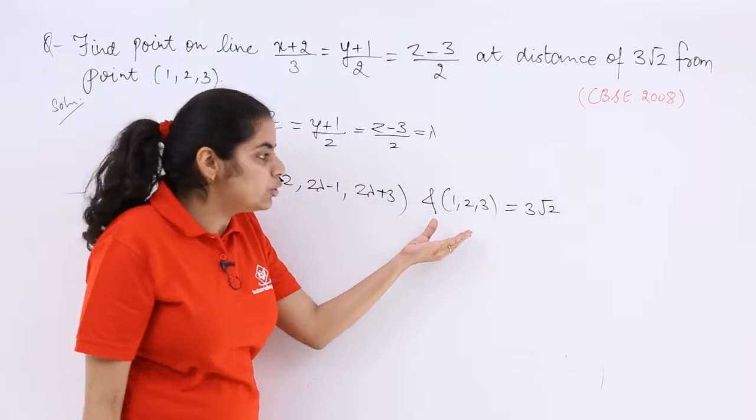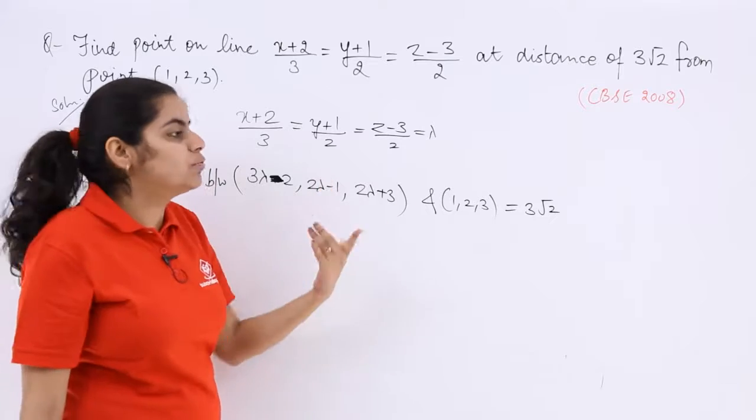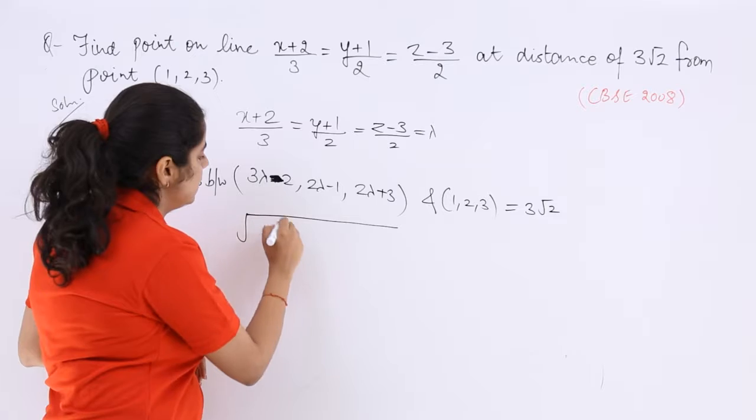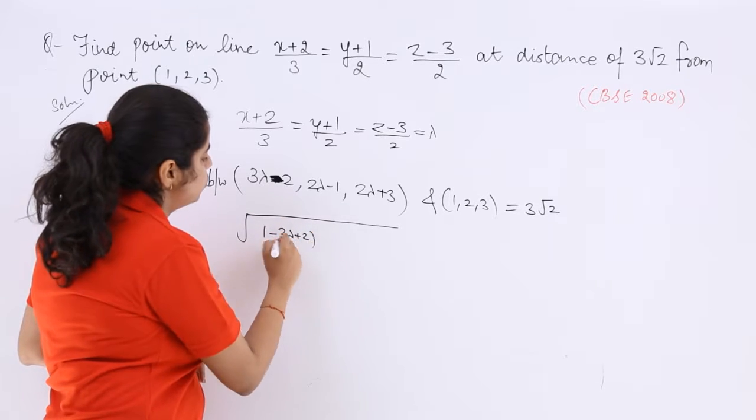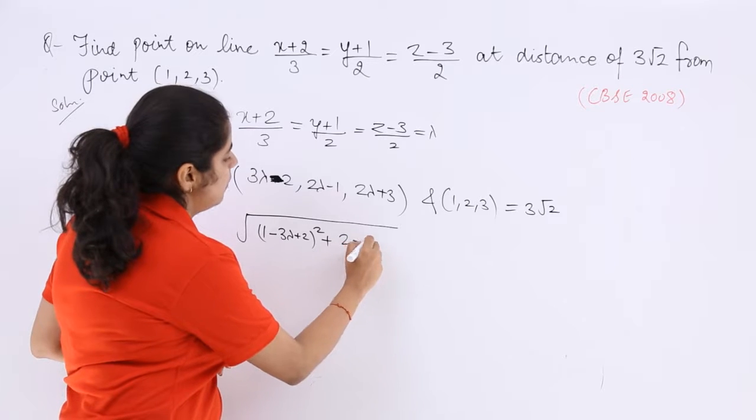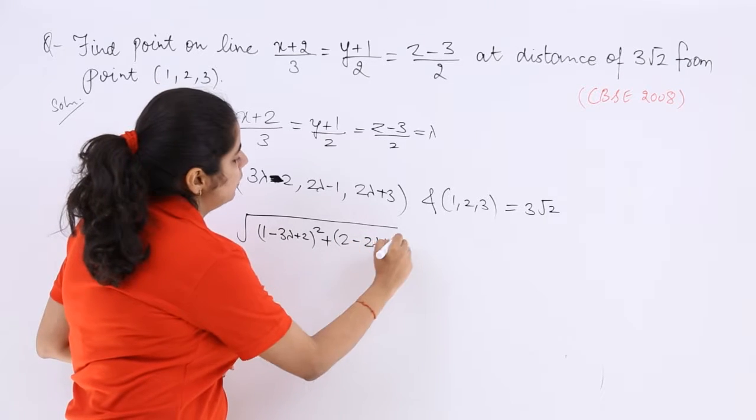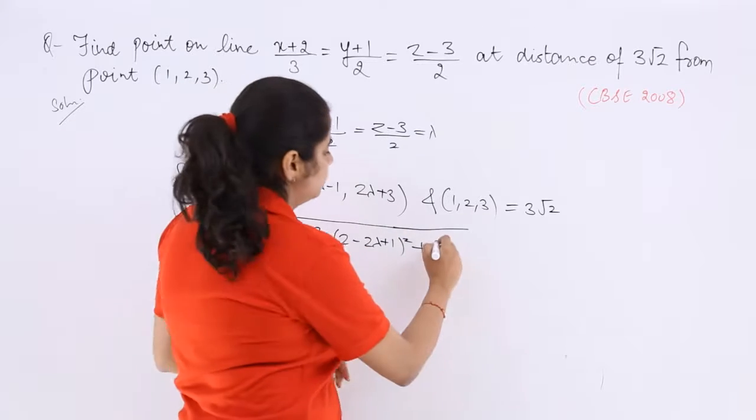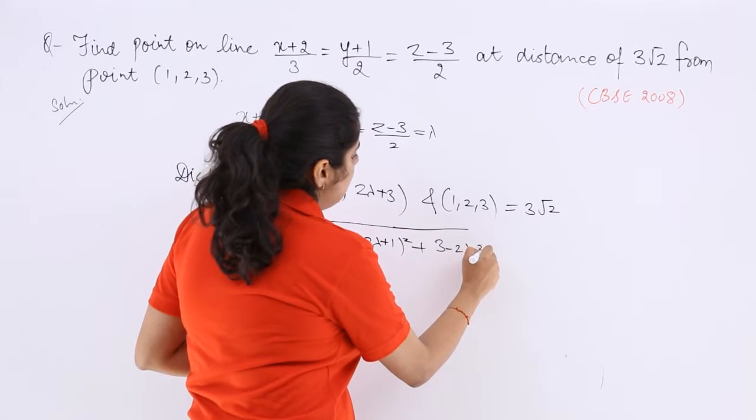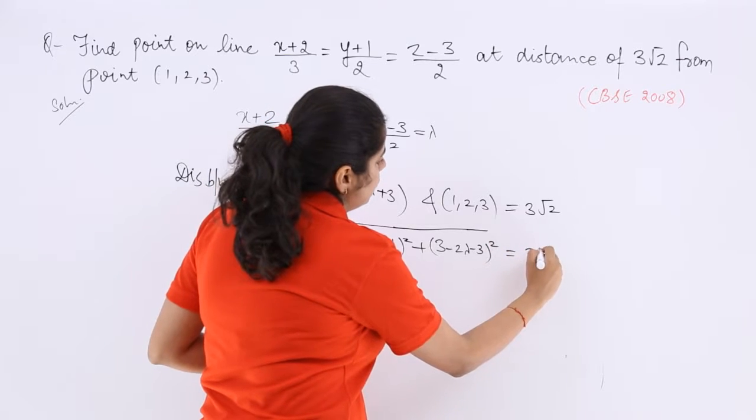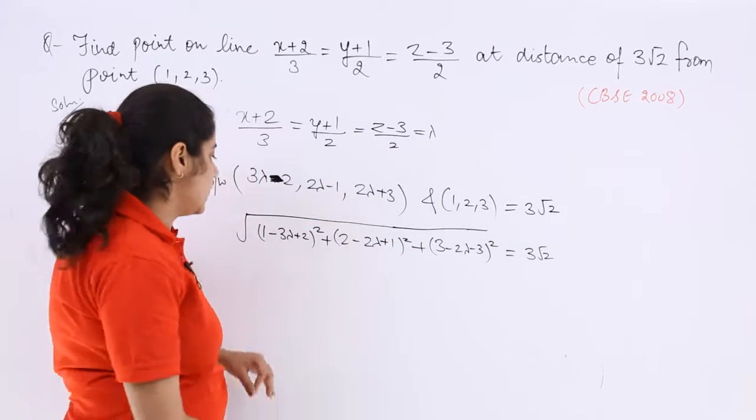Now you have to use distance formula in order to find the lambda. So under root 1 minus 3 lambda plus 2 whole square plus 2 minus 2 lambda plus 1 whole square plus 3 minus 2 lambda minus 3 whole square, which is equal to 3 root 2. Now you can square both sides.